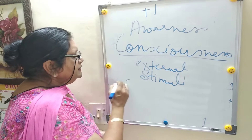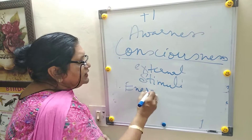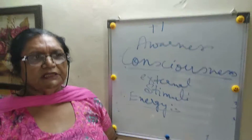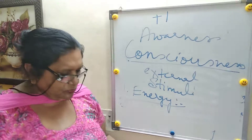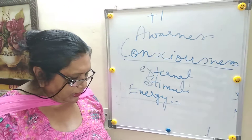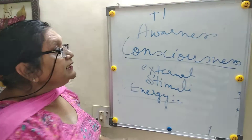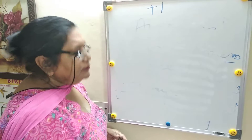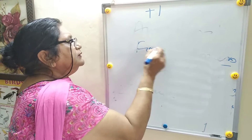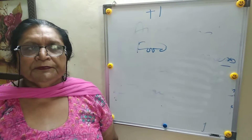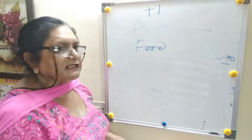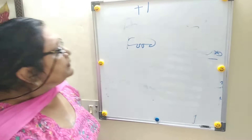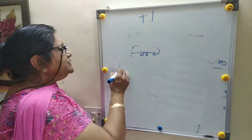Another property is that every living being needs energy. Energy means the capacity to do some work, and we get energy from food. So every living being needs food for their survival. This is another important property of living beings.